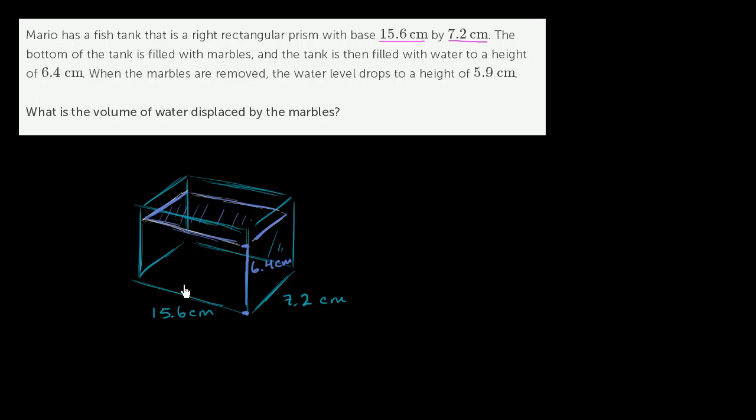Here, when the marbles are removed, and it started off with some marbles on the bottom. They don't tell us how many marbles. When the marbles are removed, the water level drops to a height of 5.9 centimeters. So it drops to 5.9, from 6.4 to 5.9 centimeters. What is the volume of the water displaced by the marbles? So when you took the marbles out, the water dropped from 6.4 centimeters down to 5.9 centimeters. So how much did it drop? Well, it dropped 0.5 centimeters.